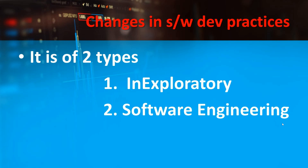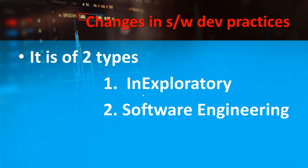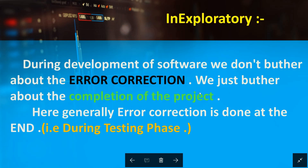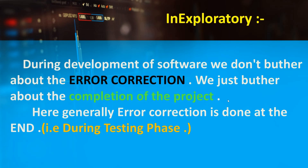So today we are going to learn about the changes in software development practices. The first one is the exploratory method. In the exploratory method, during the development of software, we do not bother about error correction. We just focus on the completion of the project.